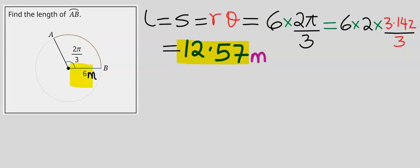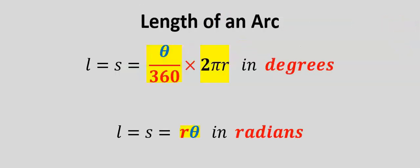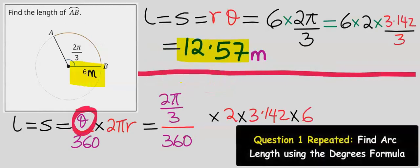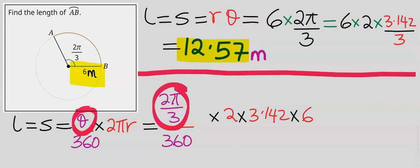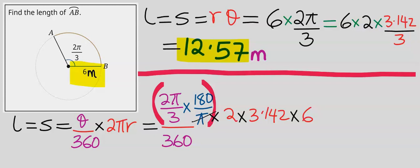Remember, the radius is in meters. We can achieve the same result using the degrees formula. In the formula this is in degrees, however this is in radians. To convert this, we're going to multiply it by 180 over π. π cancels out this π. Three here is one, and three here is 60.